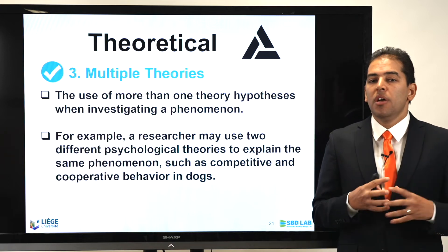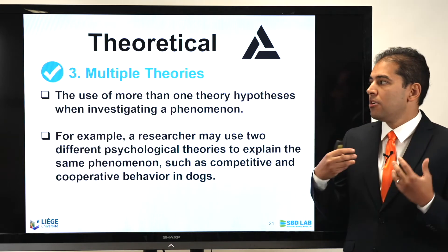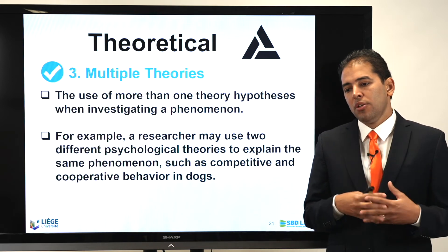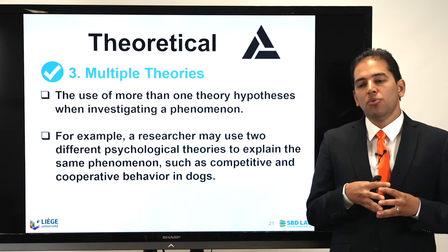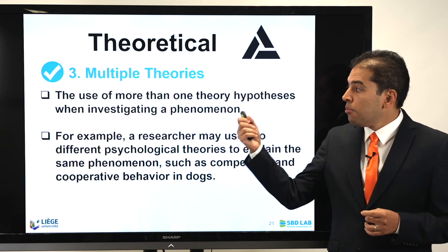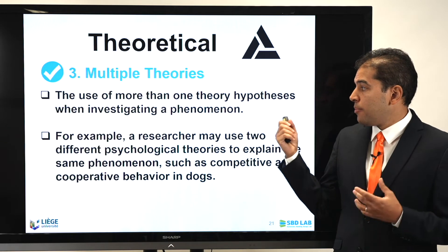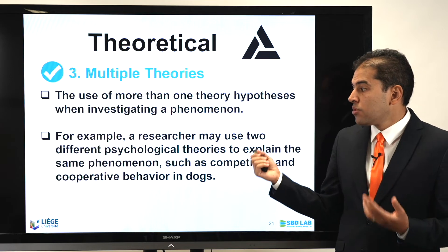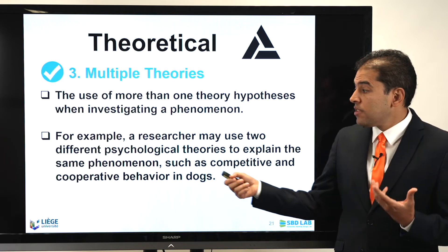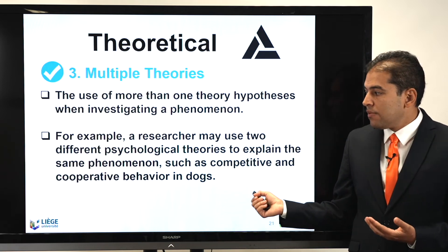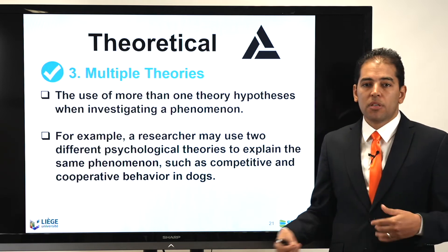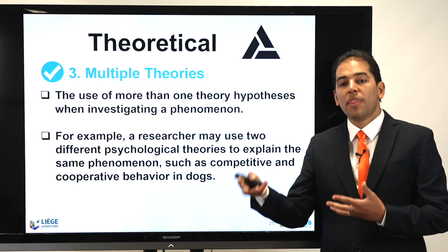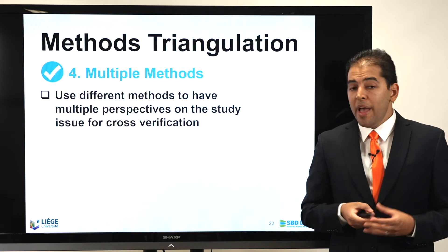The third type of triangulation is theoretical triangulation. If you are applying theories in your research and trying to apply them to your observations, here you use more than one theory or hypothesis when investigating a phenomenon. For example, a researcher may use two different psychological theories to explain the same phenomenon, such as competitive and cooperative behavior in dogs. This is an example of triangulating by using different theories to interpret your findings.